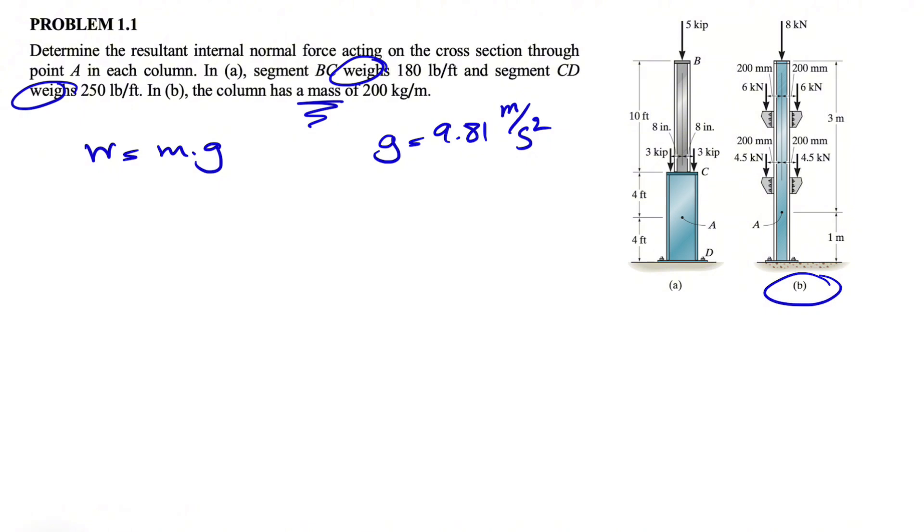We're going to start with the free body diagram of each of these two. We have point A in each of them. Let's start with part A. Basically, we have the upper part and the bottom part, so we're going to do a section at point A.